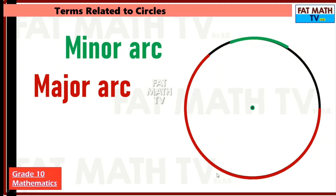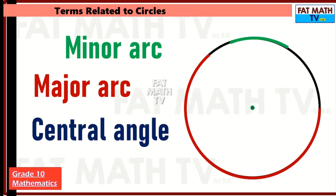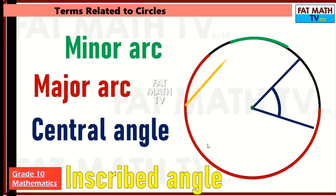If it's more than the semicircle or bigger, then it is called a major arc. And a central angle is an angle whose sides are radii of the circle and whose vertex is the center of the circle. So this is an example of a central angle. And an inscribed angle is an angle whose sides are chords of the circle.